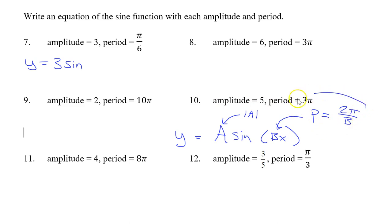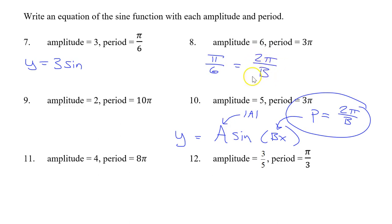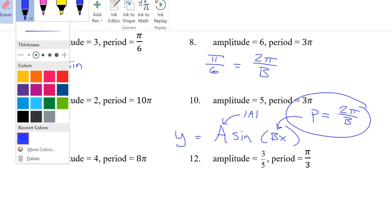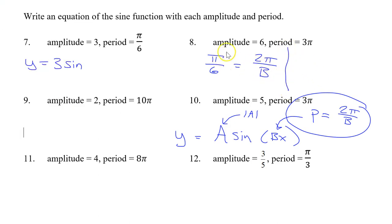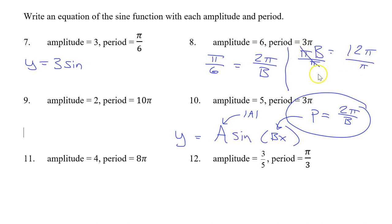I could have put a negative 3 and it would still have an amplitude of positive 3. Now, they're giving us the period is pi over 6. Using this formula, I'm going to take pi over 6 and put it in for p, so pi over 6 equals 2 pi over b. Cross multiplying gives pi b equals 12 pi. Dividing both sides by pi, b equals 12. So the equation is y equals 3 sine of 12x.